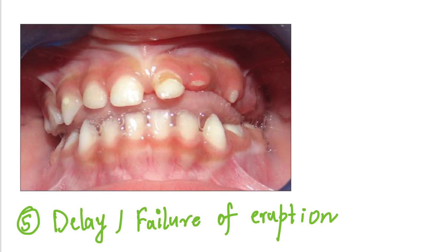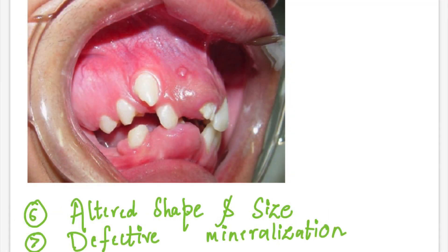In many cases these teeth fail to erupt into the oral cavity or may be partially erupted. In this picture we can see failure of eruption of the lateral incisor and canine, and in another picture the central incisor has failed to erupt completely — just a small calcified mass is visible. This condition leads to alterations in the shape and size of the teeth, with defective mineralization, as the formation of dentine is disrupted and mineralization of dentine as a whole is also defective.